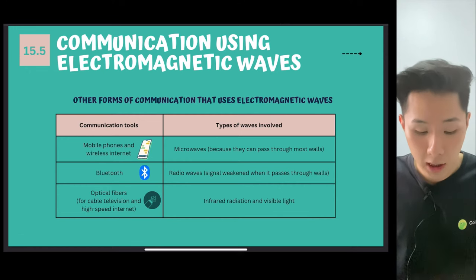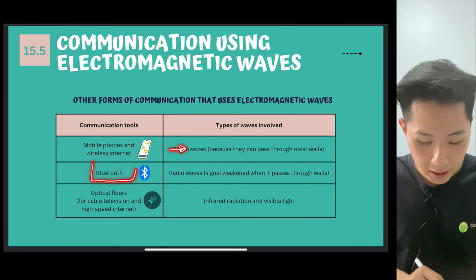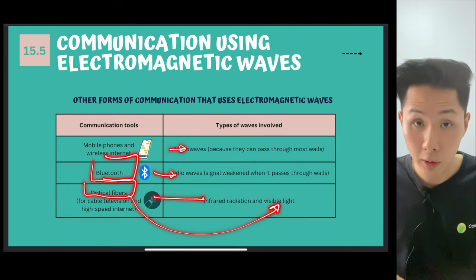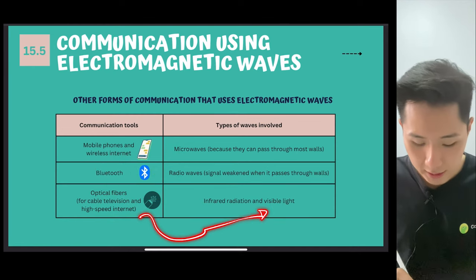The other form of communication that use electromagnetic wave: mobile phone and wireless internet, they use microwave. Bluetooth, radio wave. And also optical fiber, they use infrared radiation and also visible light. Remember total internal reflection. That's how they work in optical fiber.